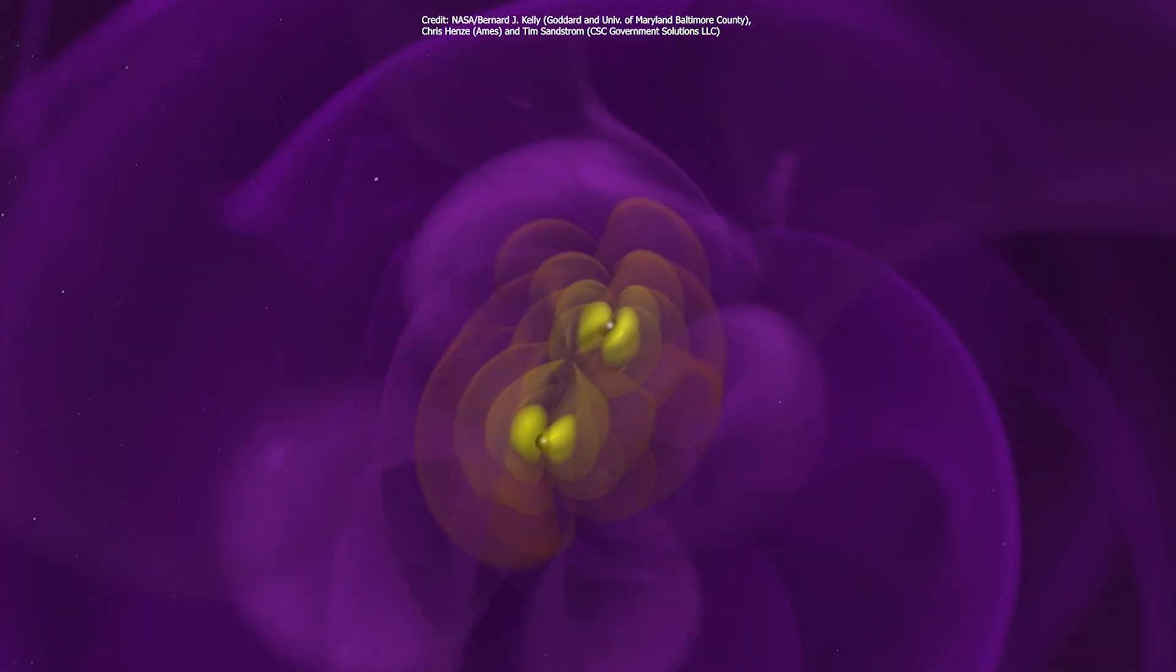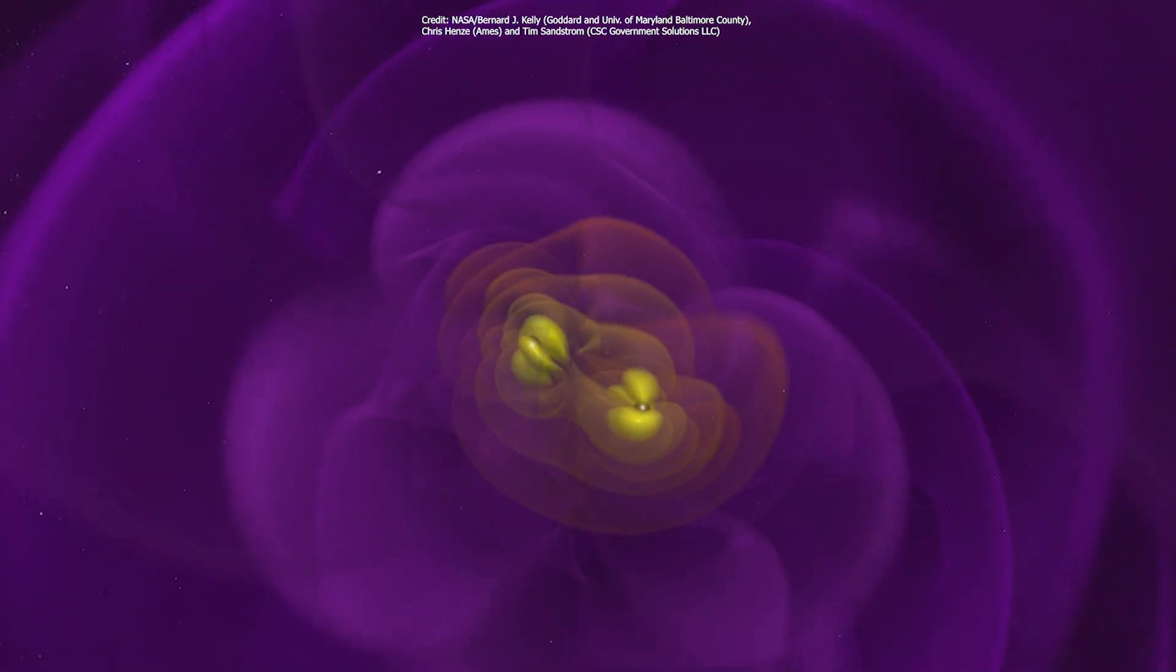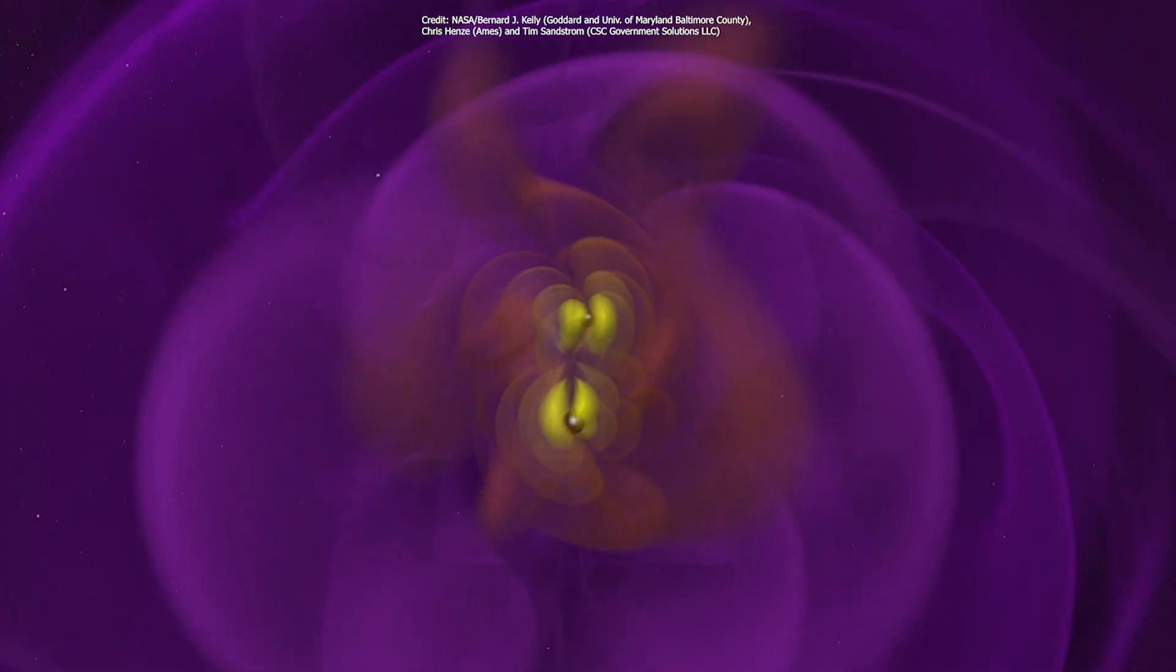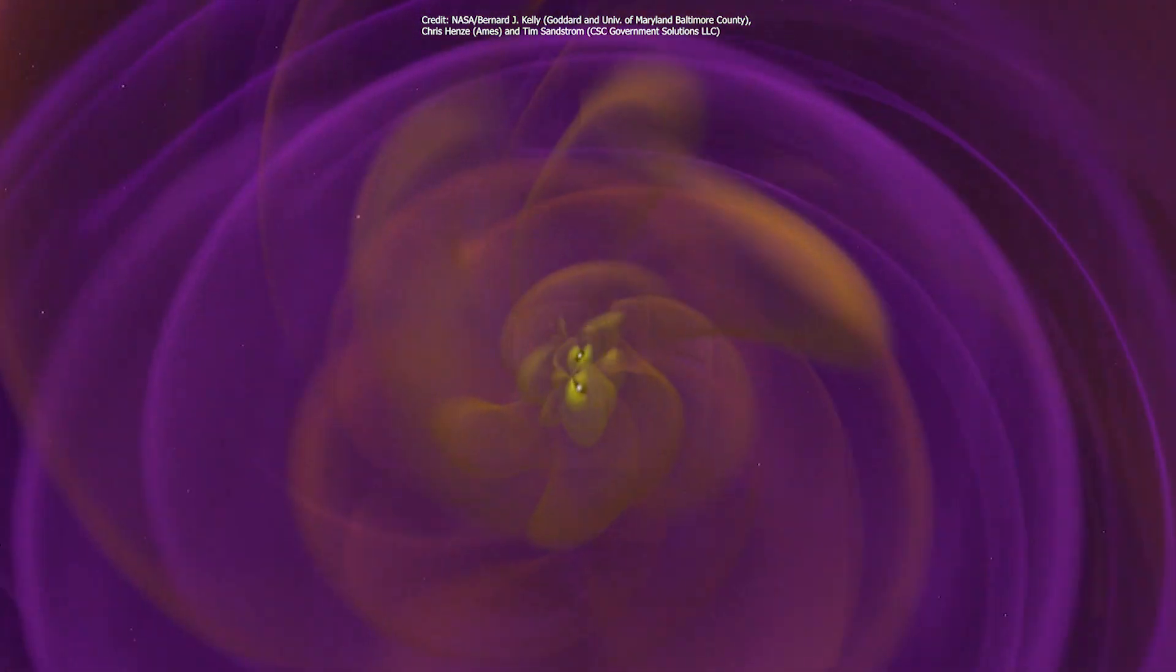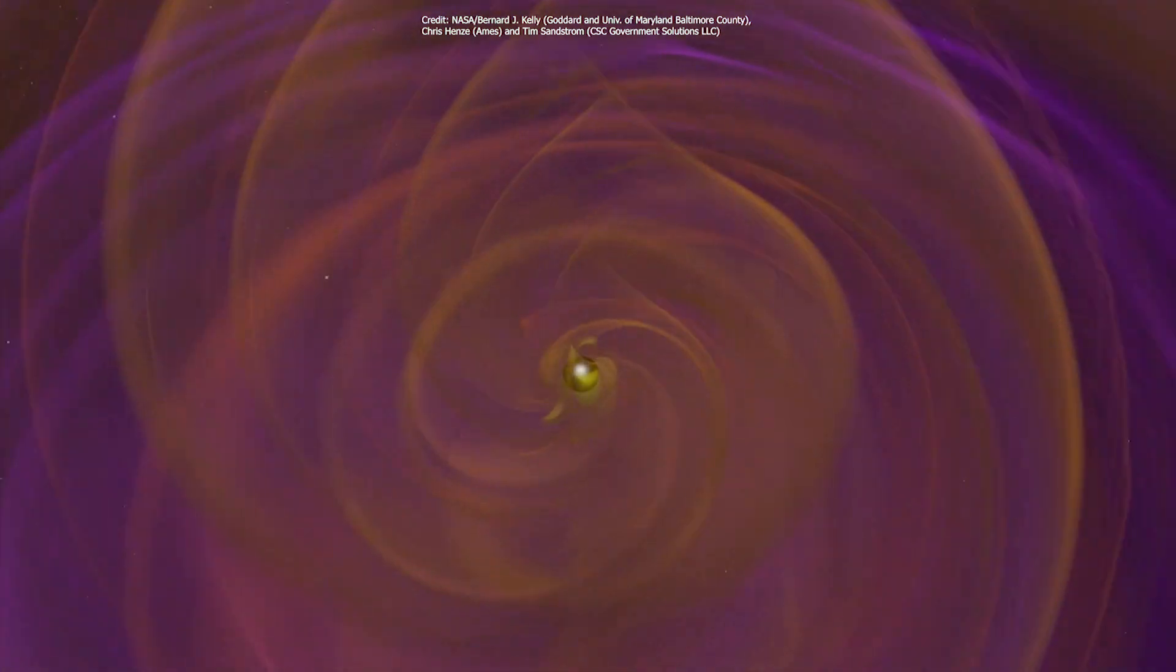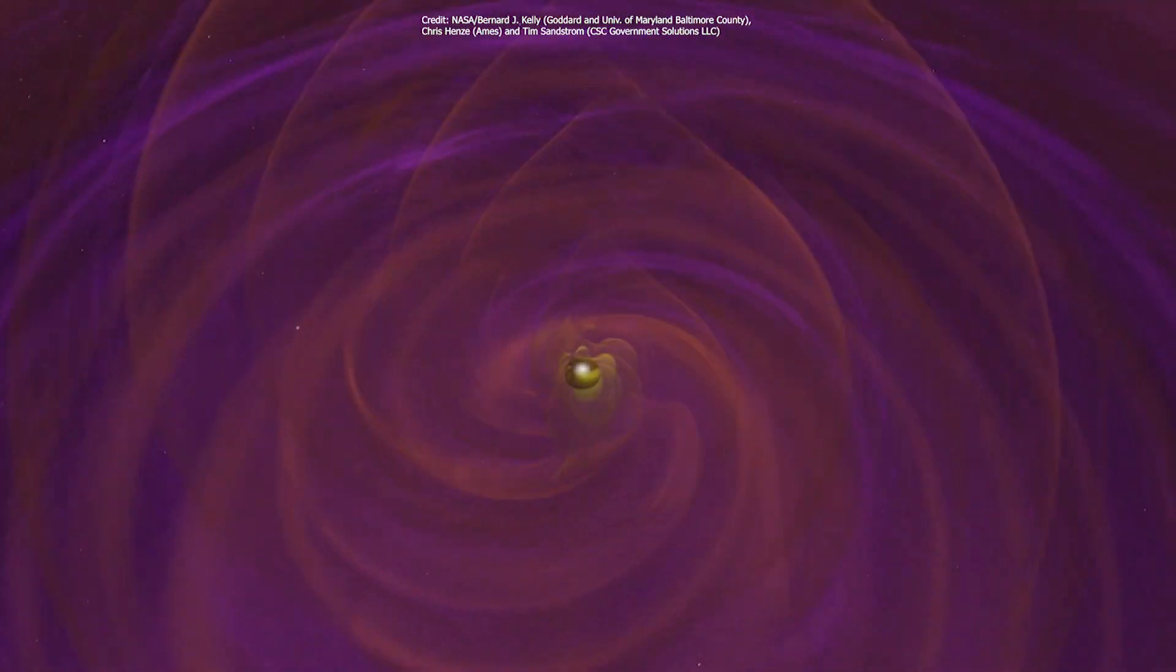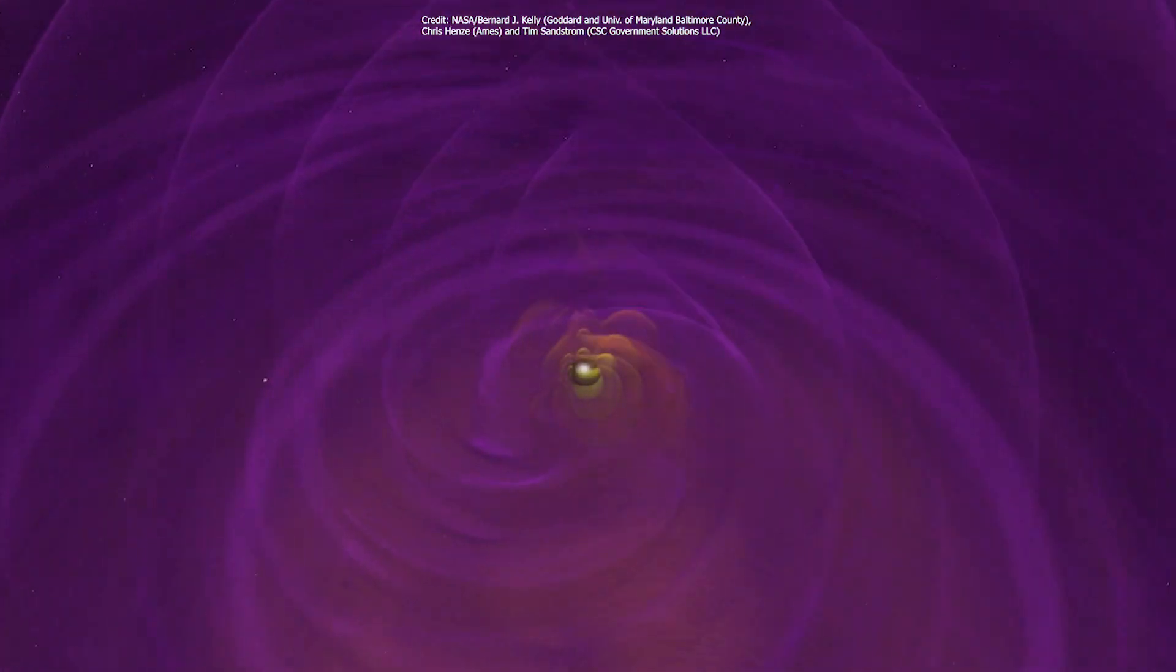About 10 billion years ago, two highly spinning mammoth black holes, weighing in at 85 and 66 times the mass of the sun, merged together, converting about eight solar masses into pure energy in the form of gravitational radiation.